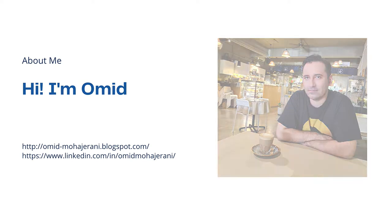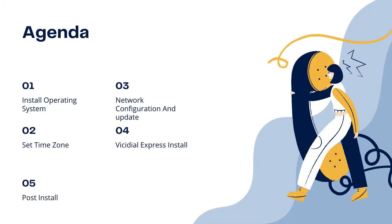Let's go to the agenda for this video. The first step is operating system installation — VCBox uses OpenSUSE as the operating system. After installing the OS, we will set the correct time zone, since accurate timing is crucial in real-time voice communication. In the third step we will configure the network, set the IP address, set the default gateway, and update the system. Step four is to install VCBox using VCDial express installation. Finally, we will do some post-installation tasks and log in as admin.